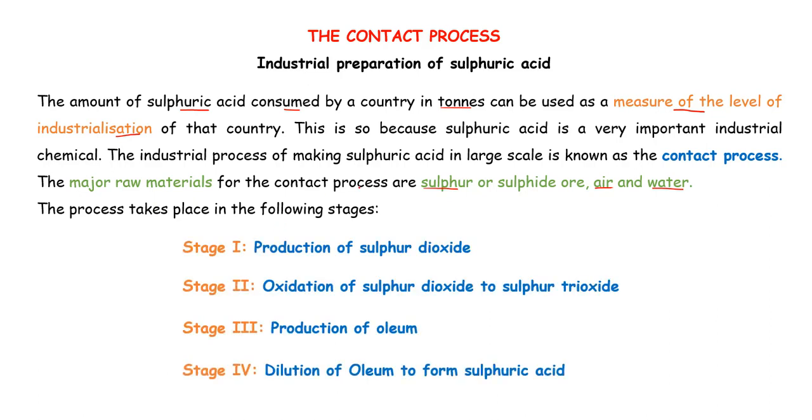In stage 1, we shall look at the production of sulfur dioxide. Stage 2, we shall oxidize our sulfur dioxide to sulfur trioxide. Then we shall produce our oleum. And lastly, we shall dilute our oleum to produce our sulfuric acid.